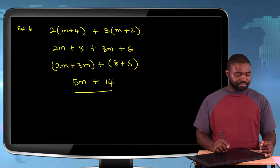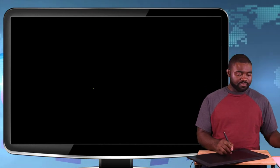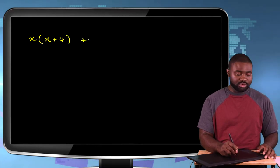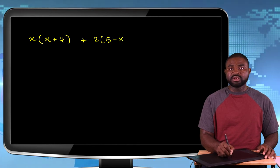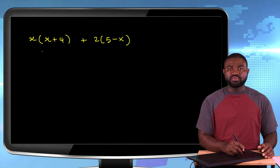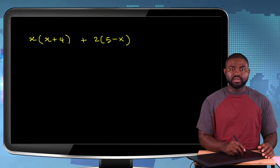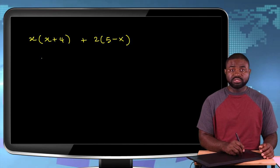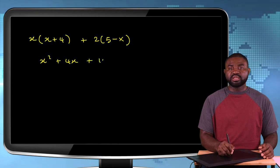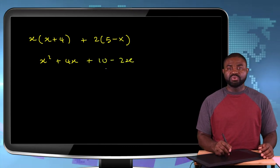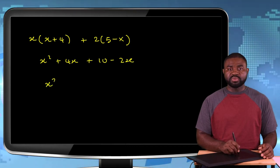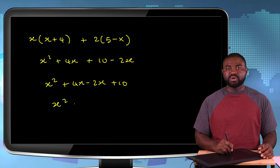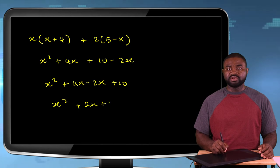Another example: x bracket x plus 4 plus 2 bracket 5 minus x. We first remove the brackets by multiplying out each term, giving us X squared plus 4X plus 10 minus 2X. Then we group like terms: X squared is by itself, plus 4X minus 2X plus 10. This simplifies to X squared plus 2X plus 10.